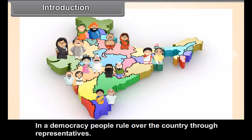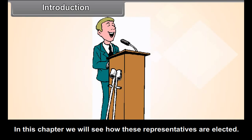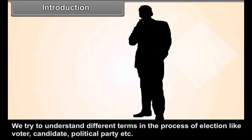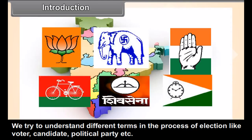In a democracy, people rule over the country through their representatives. In this chapter, we will see how these representatives are elected. We try to understand different terms in the process of election like voter, candidate, political party, etc.